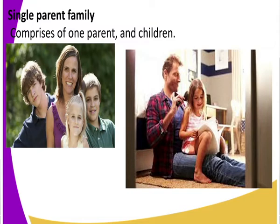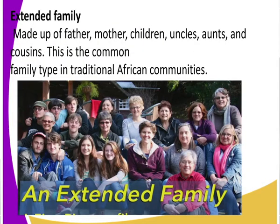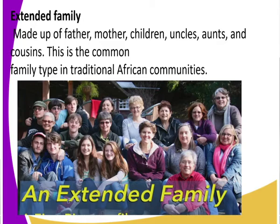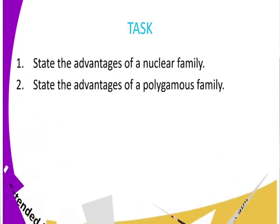Let's look at the extended family. This is made up of father, mother, children, uncles, aunts, cousins, and all those relatives. It extends from a nuclear family — father, mother, children — out to the extended family members. In the image you can see father, mother, children, grandfather, grandmother, cousins, aunties, uncles — all those in one basket.